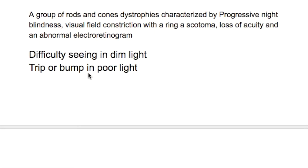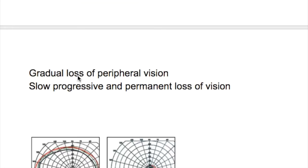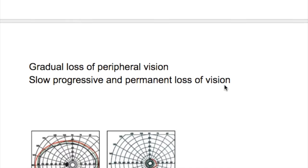The clinical features include difficulties seeing in dim light, and the patient may trip or bump into objects in poor light. There is a gradual loss of peripheral vision and a slow, progressive, and permanent loss of vision.